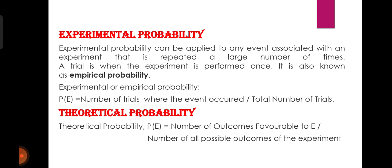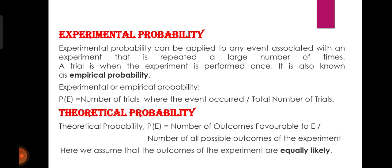एक example लेके चलते हैं — एक dice को throw किया है। अब आप यह पता करना चाहते हैं कि 6 के आने की probability क्या है। तो total possible outcomes क्या हैं: या तो 1 आयेगा, 2 आयेगा, 3 आयेगा, 4 आयेगा, 5 आयेगा, या 6 आयेगा — तो 6 outcomes हैं। और 6 केवल एक बार repeat हो रहा है, तो इसका मतलब 6 के आने की probability हो गई 1/6 — एक बटे 6। हम यह मानते हैं कि इस experiment में जो outcomes हैं, वो equally likely हैं।